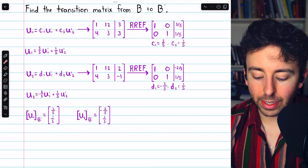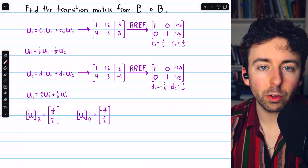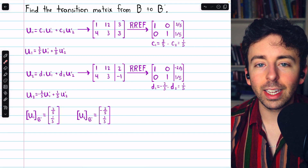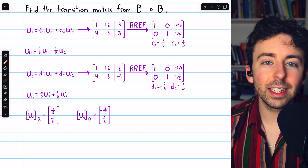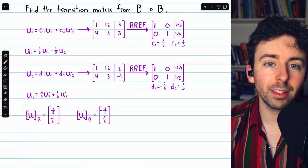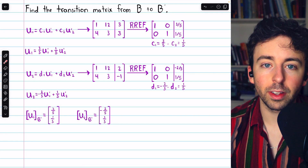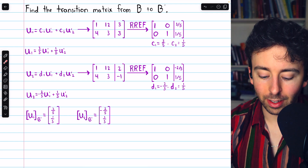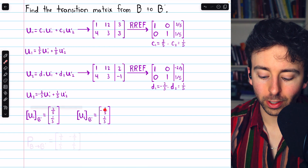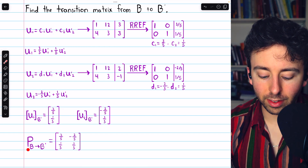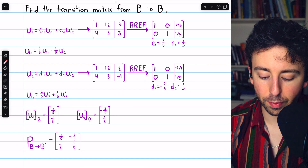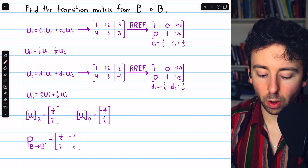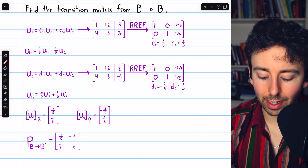These are what we need to construct the transition matrix. The transition matrix is the matrix whose columns consist of the old basis vectors relative to the new basis — so this column and this column. And there it is: that's our transition matrix from the old basis B to the new basis B'. Its columns are the old basis vectors relative to the new basis.